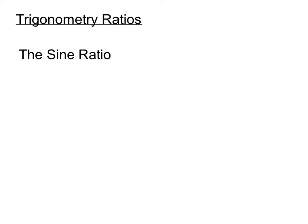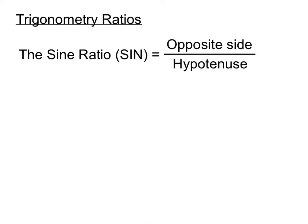The sine ratio uses the opposite side over the hypotenuse — it's a ratio of the opposite side over the hypotenuse, we call it the sine ratio. So we can say that sine Theta, the sine of some angle we're considering, will equal the opposite side over the hypotenuse, and we'll just use O and H to represent those sides.